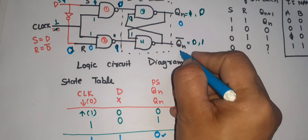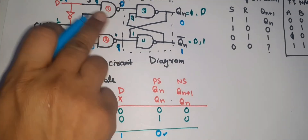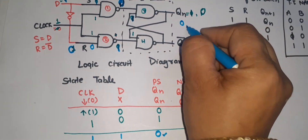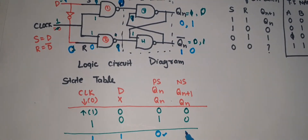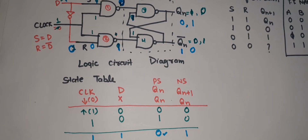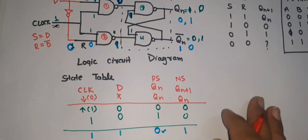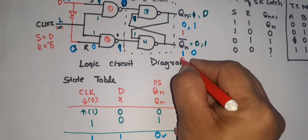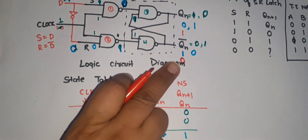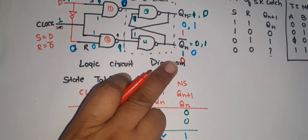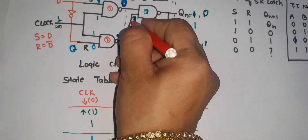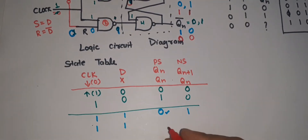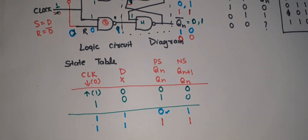Q-bar will be one. Gate number three input is zero, so feedback value is one, and output from that is zero, so we write Qn+1 equals one here. Now if present state is one, its complement is zero. Gate number three feedback is zero, output is one. Gate number four: one and one gives output zero. So when present state was one, next state is also one.